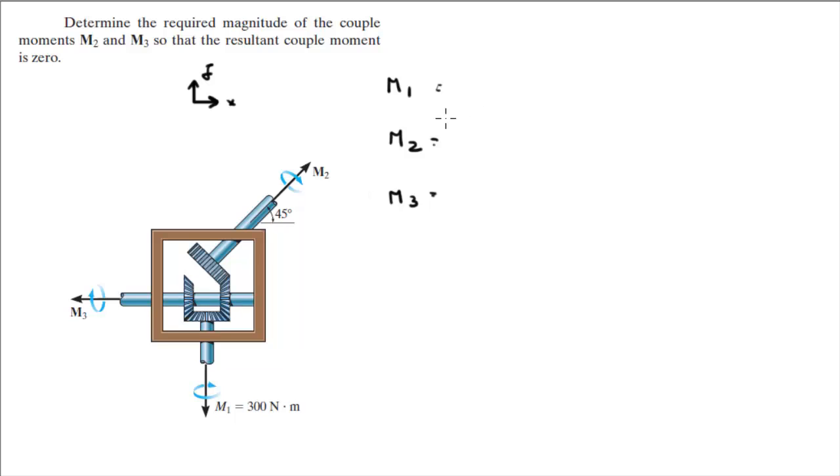M1 is going straight down with a magnitude of 300, so it's 0 on the i minus 300 in the j. Simple.